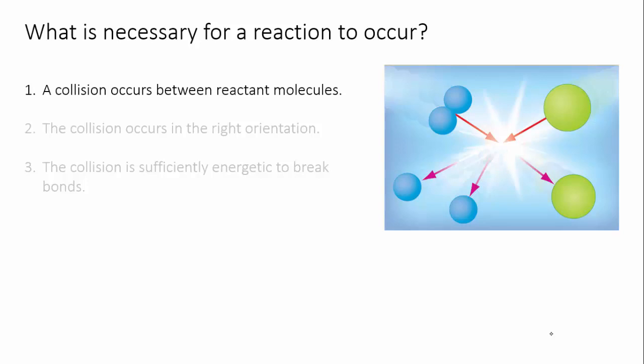Well for a reaction to occur some or all of the bonds in the reactant molecules need to break so that the atoms can rearrange, create new bonds and form the product molecules. So here are three conditions that are necessary for a reaction to occur. They all have to do with the need to break bonds in the reactants.